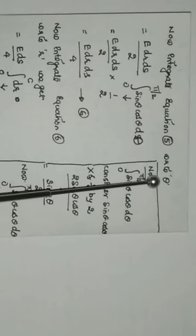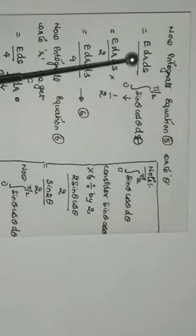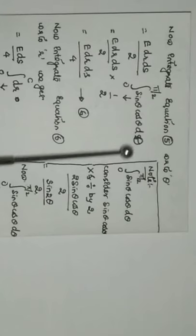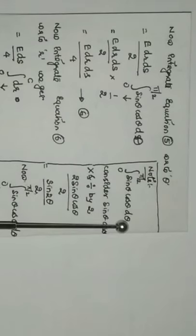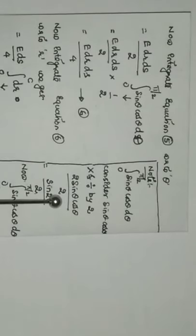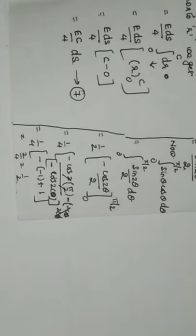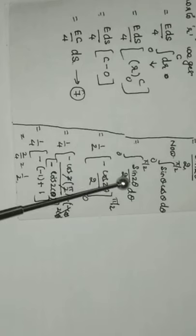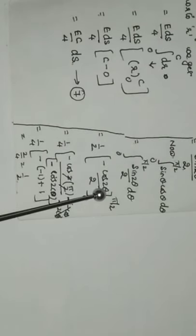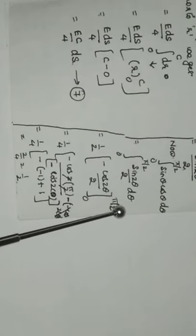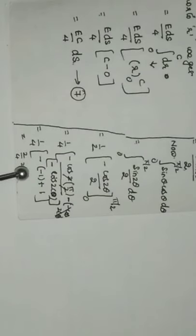Now integrating again with respect to θ: we have e·dr·dS/2 times the integral from 0 to π/2 of sinθ·cosθ·dθ. Using the identity 2sinθ·cosθ = sin2θ, this component becomes sin2θ/2. Taking 1/2 common, the integral of sin2θ gives −cos2θ/2, with limits 0 to π/2. On substitution this evaluates to 1/2, giving a total value of 1/2. Therefore the component becomes e·dr·dS/4, which is equation 6.